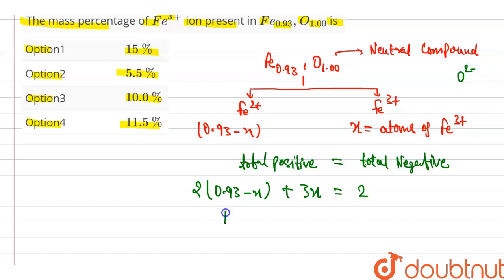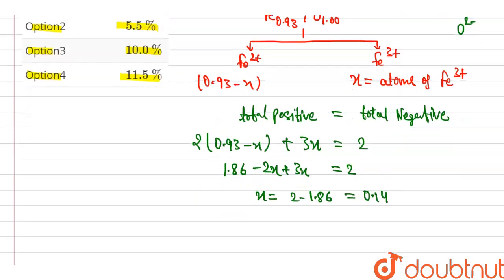Now we are solving, then we get 1.86 minus 2x plus 3x equals 2, then x equals 2 minus 1.86, then x equals 0.14. Now the percentage of Fe+3 is 0.14 upon 0.93 into 100. Solving this we get 15.05%.